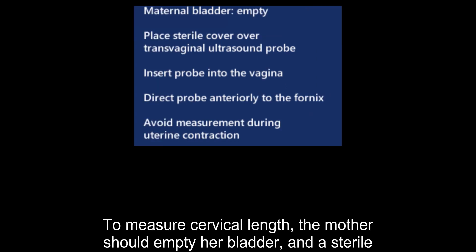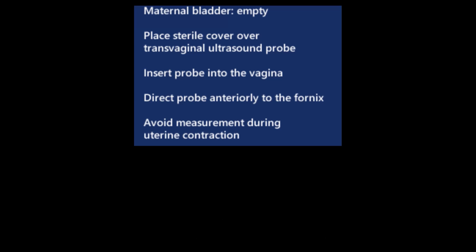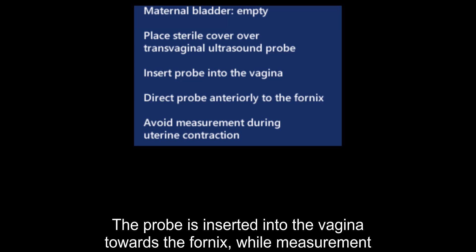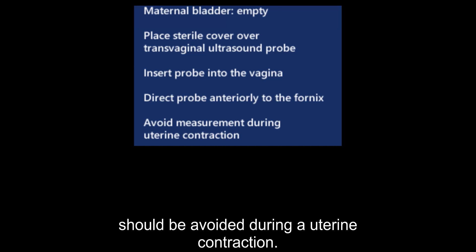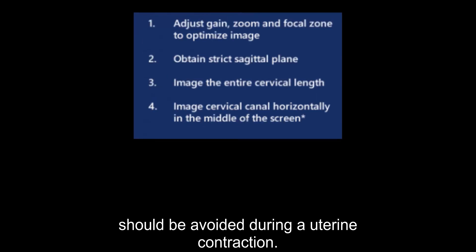To measure cervical length, the mother should empty her bladder, and a sterile probe cover must be used. The probe is inserted into the vagina towards the fornix, while measurement should be avoided during a uterine contraction.